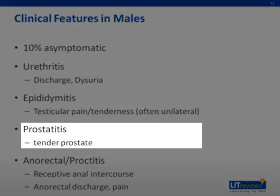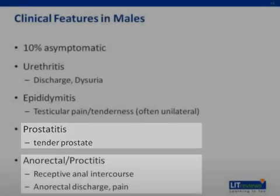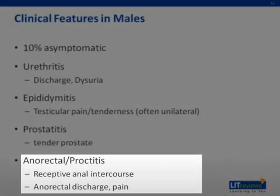In men having sex with men, prostatitis, anal rectal infection, or proctitis can occur. In prostatitis, you may find a tender prostate on physical exam. In anal rectal infection or proctitis, clinical signs include anal rectal discharge and perianal or peri-rectal pain.